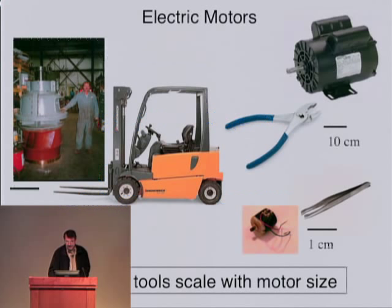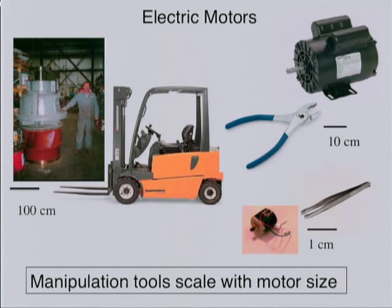One important aspect of working with machinery, for example electric motors, is that the tools you need to manipulate and build these things scales with motor size. If you have a relatively large electric motor, a couple of meters in size, and you want to move it around, you need a forklift. If you want to take it apart and fix it, you need wrenches on the order of a meter long. As you go smaller and smaller, you use progressively smaller tools — pliers, then small tweezers. Pretty soon these mechanical manipulation tools stop working, and you need other techniques and perhaps other materials.